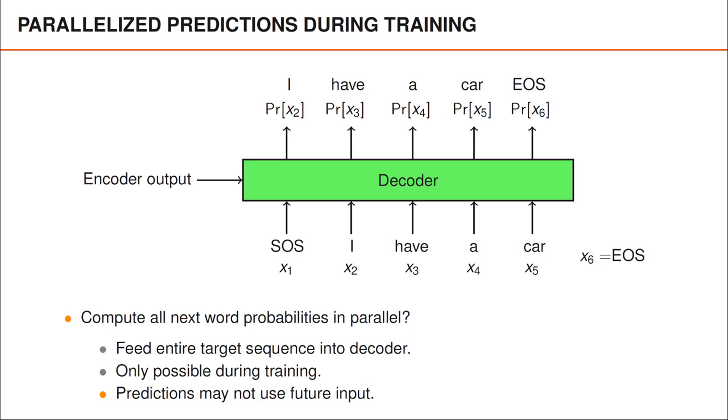And we shouldn't tell the network that the value of x4 is 'a'. As you can see, to keep the notation simple, I've only written the probability of x4 here, which means that I've omitted the variables that we condition on, which in this case should be the encoder output and x1, x2, and x3.